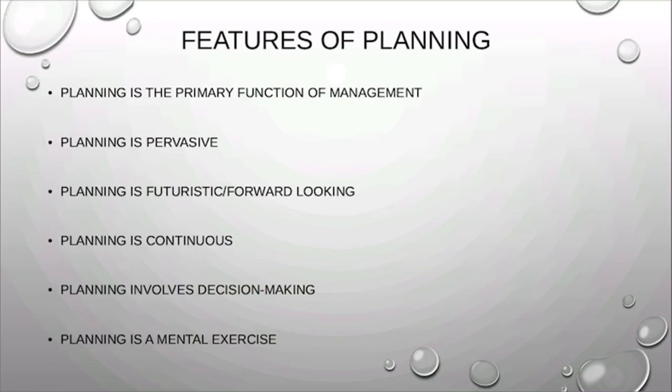For example, in the organizing function, managers assign authority and responsibility to employees — and that authority and responsibility depends on objectives. In staffing, we appoint employees — how many people to appoint, what kind of people to appoint — that also depends on company objectives. So until the company's objectives are planned, it is very difficult to perform any other function.